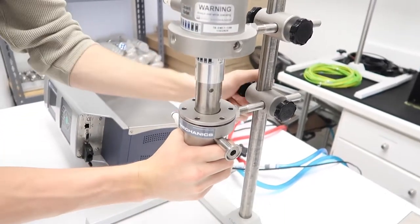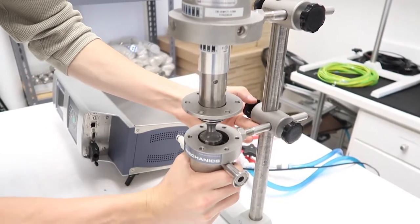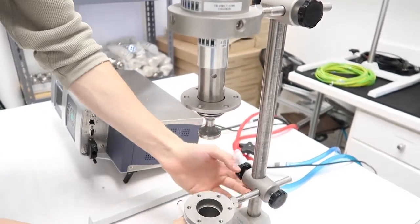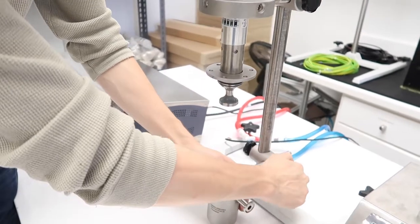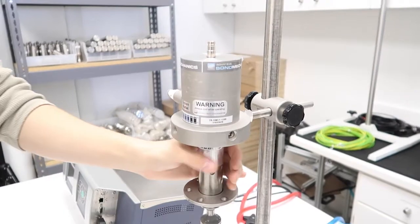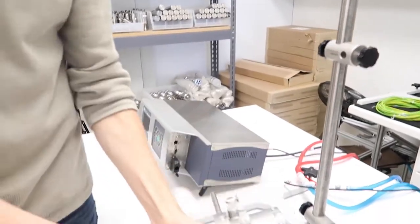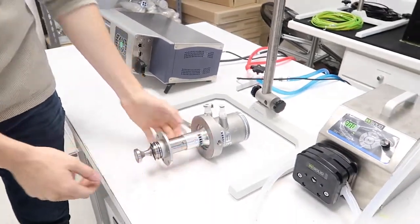Then loosen the bottom clamp holder, lower the reactor chamber and remove it from the support stand. Next, loosen the top clamp holder and remove the transducer barbell horn assembly from the support stand by pulling it forward.